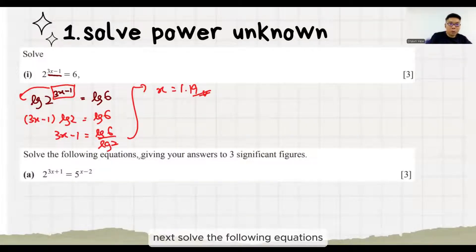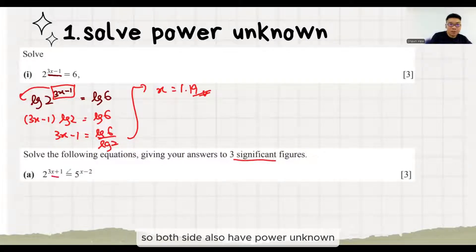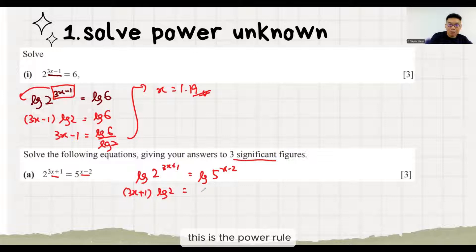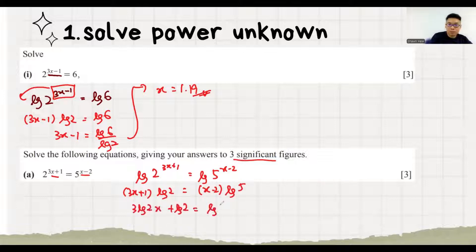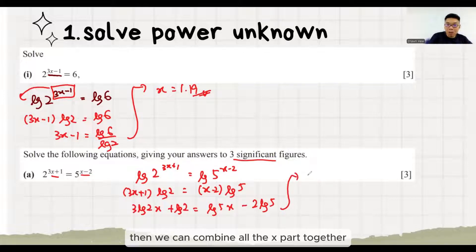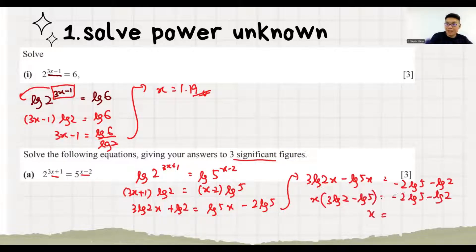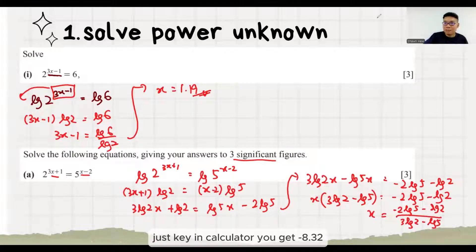Next, solve the following equations giving your answers to 3 significant figures. Both sides also have power unknowns. We just log both sides. Then the power comes to the front — this is the power rule. Then we can combine all x parts together. Throw this down. Just key in the calculator. You get negative 8.32.